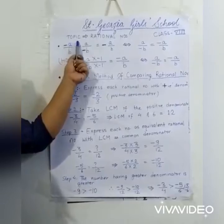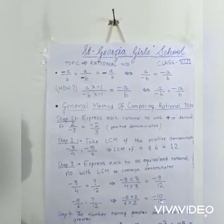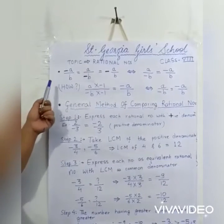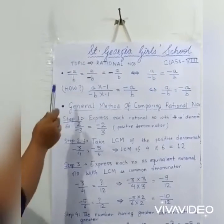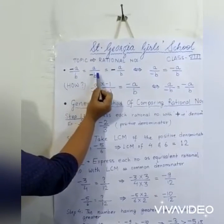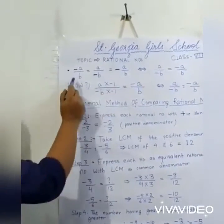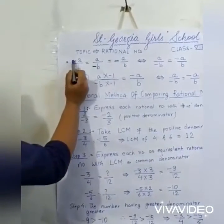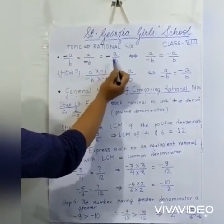Today we are covering the topic of rational numbers for class 8. In previous classes we came to know about negative rational numbers, positive rational numbers, and standard form of a rational number. A negative number can be represented as minus a by b, or a by minus b, or with minus in the middle. All three forms are equal.